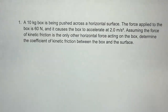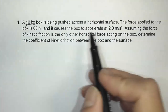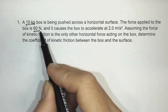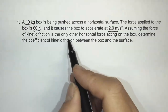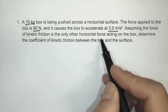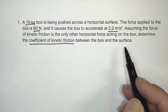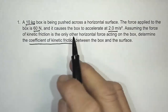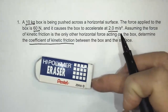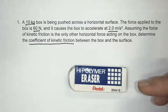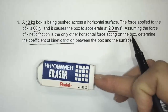Here's our first problem. A 10 kilogram box is being pushed across a horizontal surface. The force applied to the box is 60 newtons, and it causes the box to accelerate at 2 meters per second squared. Assuming the force of kinetic friction is the only other horizontal force acting on the box, determine the coefficient of kinetic friction. Kinetic friction is when the object is sliding and moving relative to the surface. Static friction would be if you're pushing on it and it's not moving. Once it starts moving, we call that kinetic friction.